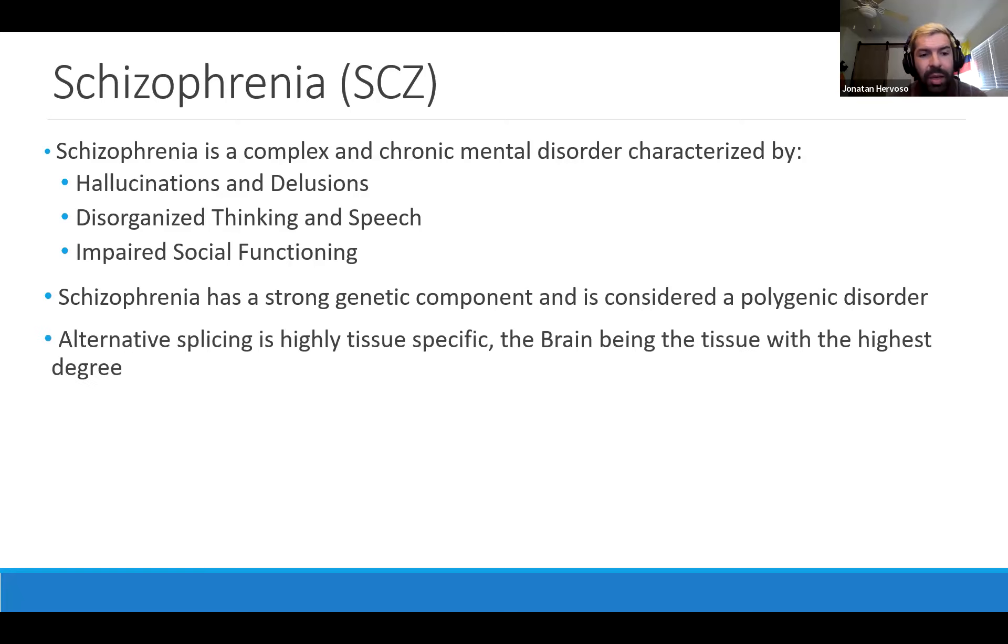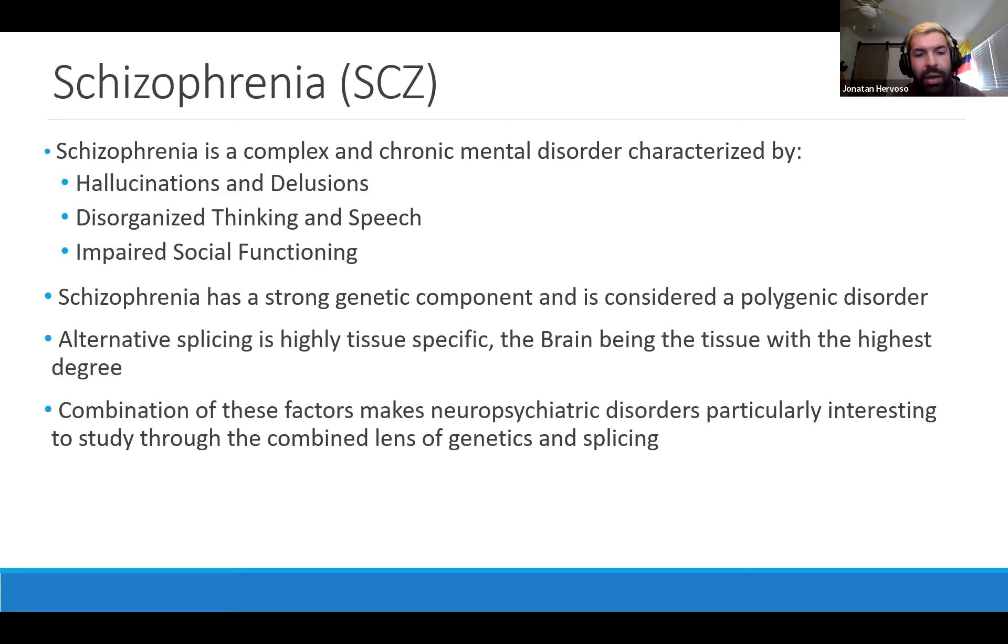Furthermore, alternative splicing is highly tissue-specific, and the brain is the tissue with the highest degree, which makes neuropsychiatric disorders like schizophrenia particularly interesting to study through the combined lens of genetics and splicing.